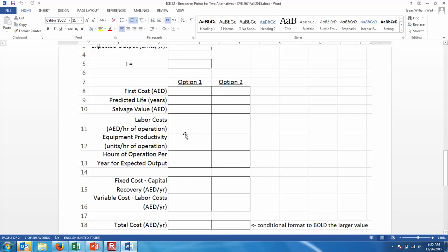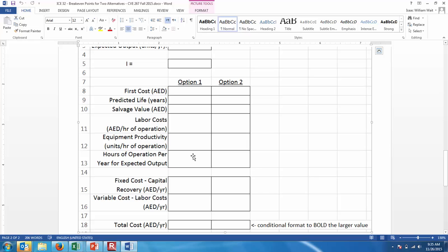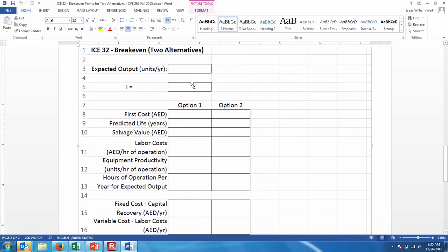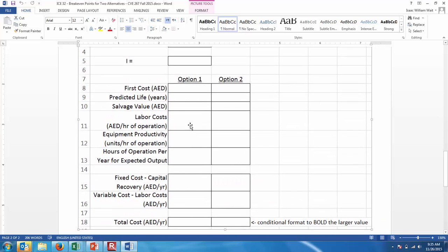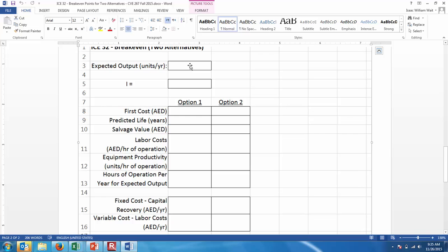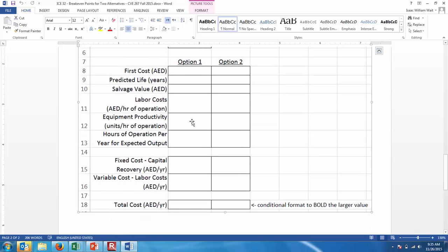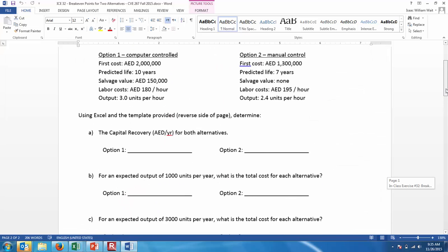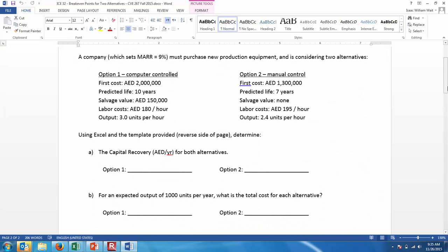Now here's an important thing. The number of hours per year that the item has to be operated is dependent on the expected output and the productivity. So if you are making 1,000 items per year, and you can do three items per hour, that tells you how many hours per year you have to operate the equipment. I'm going to let you get started on that. I have the solution and I'll be circulating around in case you've got questions.